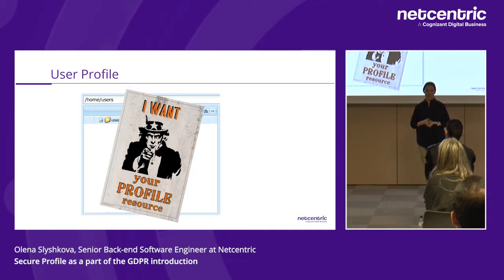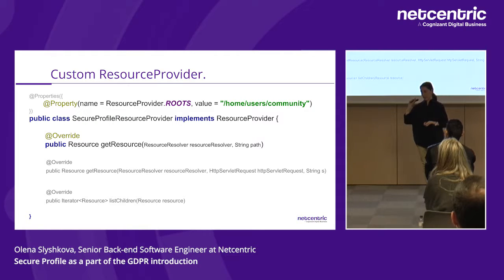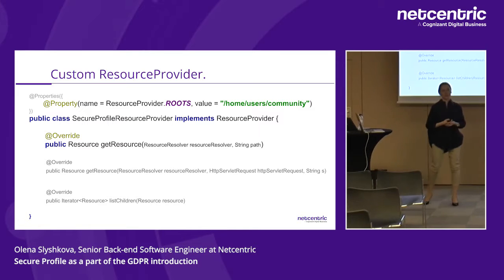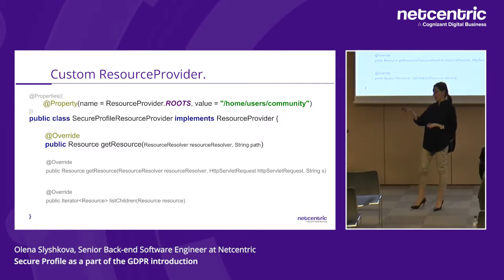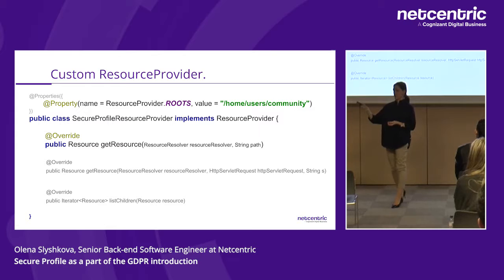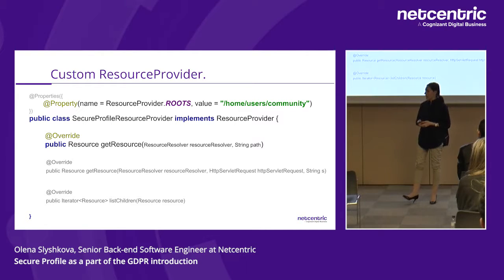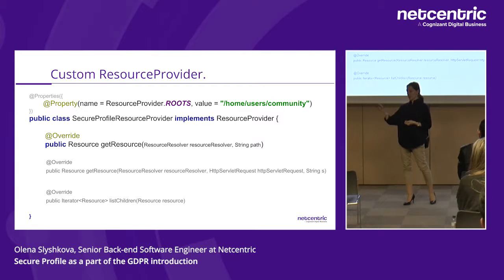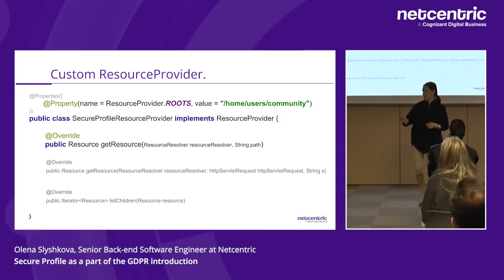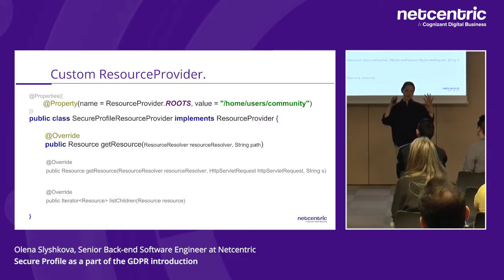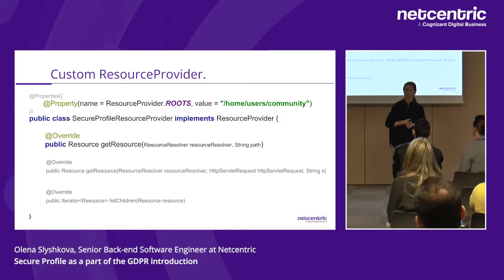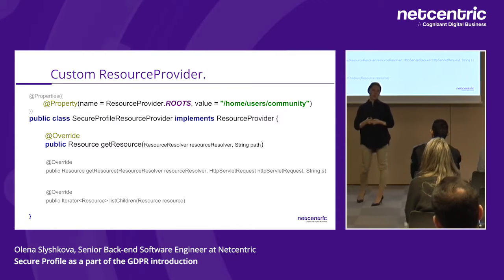That's the point where we want to gain control — and thanks to Apache Sling, we have a way to do this: it's called a custom Resource Provider. We implement the ResourceProvider interface. The first interesting property is providerRoots — the path from which our resource provider will operate. In our case it's /home/users/community, meaning all resource requests under that tree are processed by our provider.